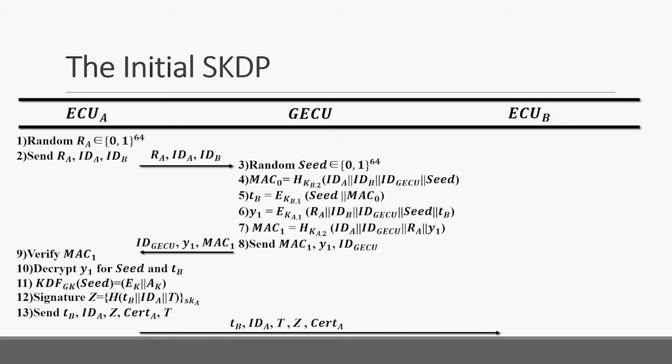Now we introduce our session key distribution protocols. We briefly introduce the initial SKDP, by which ECU A and ECU B get the same session key from the seed generated by GECU. ECU A chooses a random number RA and sends it to GECU. GECU generates a random seed and calculates the message authentication code MEC0. Then GECU encrypts the seed and MEC0 with a symmetric key and names it TB, and encrypts the seed and TB with a symmetric key and names it Y1. Then it calculates the message authentication code MEC1 of Y1.